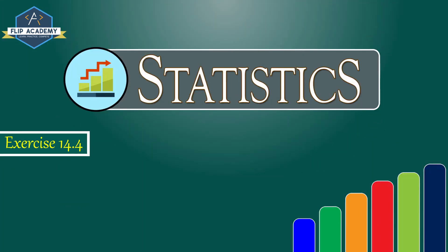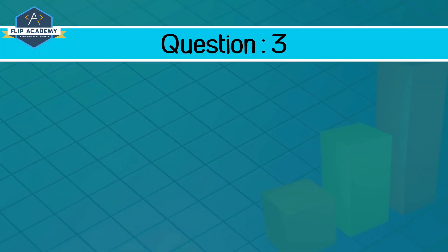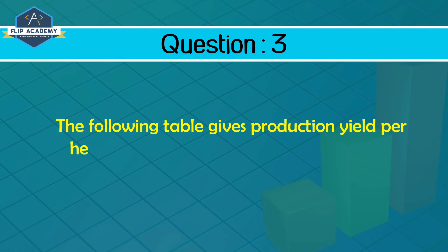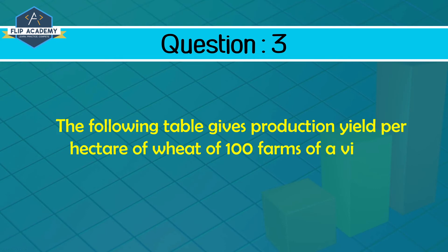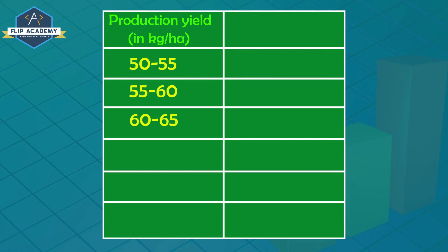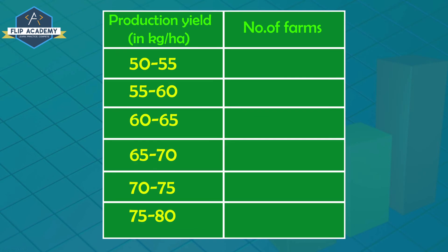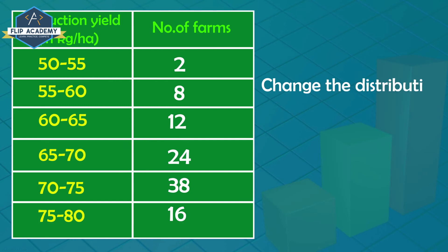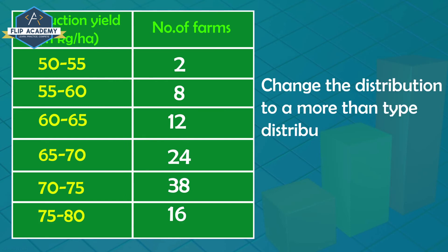Statistics Exercise 14.4, Q3: The following table gives production yield per hectare of wheat of 100 farms. Production yield in kg/hectare: 50–55, 55–60, 60–65, 65–70, 70–75, 75–80. Number of farms: 2, 8, 12, 24, 38, 16. Change the distribution to a more than type distribution and draw the ogive.